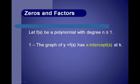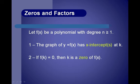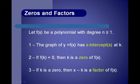Let's talk about zeros and factors. Let f of x be a polynomial with degree n greater than or equal to 1. Number 1: the graph of y equals f of x has x-intercepts at k. Number 2: if f of k equals 0, then k is a zero of f of x. And number 3: if k is a zero, then x minus k is a factor of the function.